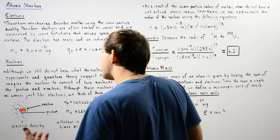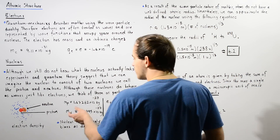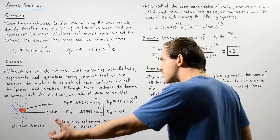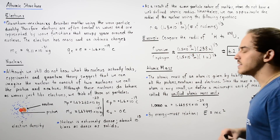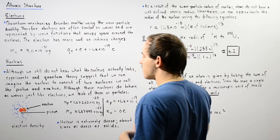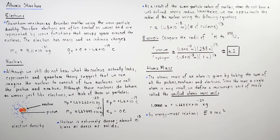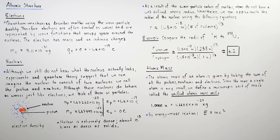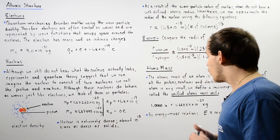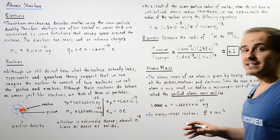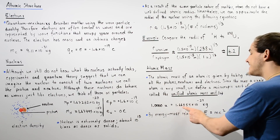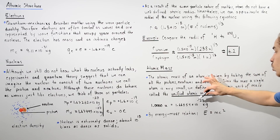Normally, when making an approximation, because the mass of the proton and neutron is so much greater than the mass of the electron, we usually neglect the mass of the electron. To calculate the atomic mass, we simply calculate the mass of the protons and the neutrons in our nucleus. Since the mass of a single atom is very, very small, we define a microscopic unit of mass called the unified atomic mass unit, given by the lowercase symbol U. One unified atomic mass unit is equal to 1.66054 times 10 to the negative 27 kilograms.